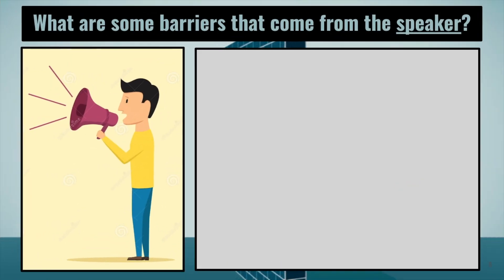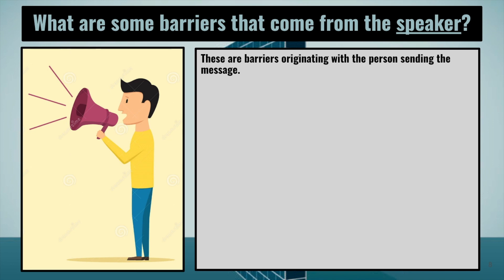What are some barriers that actually come from the speaker themselves? We've talked about the surrounding environment and we've talked about the listener. Is there something about the speaker that can also affect the listener? These are barriers that originate with the person who is sending the message.